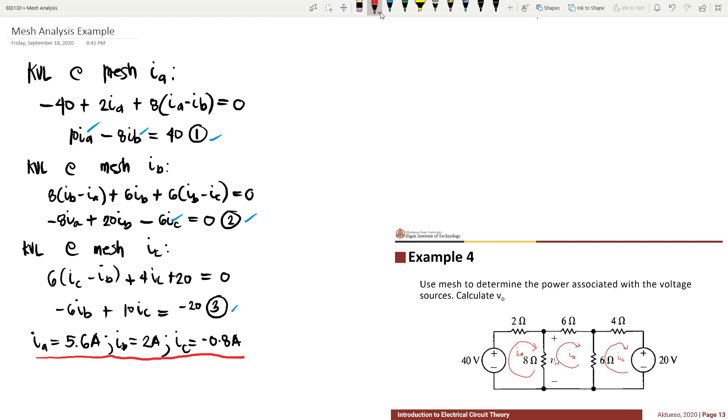Having these values, we can solve for the power associated with the voltage sources. Power of the 40 volt source, we have negative 40 times Ia, which gives us negative 224 watts. Power of the 20 volt source is equivalent to 20 times Ic, which is equivalent to negative 16 watts.